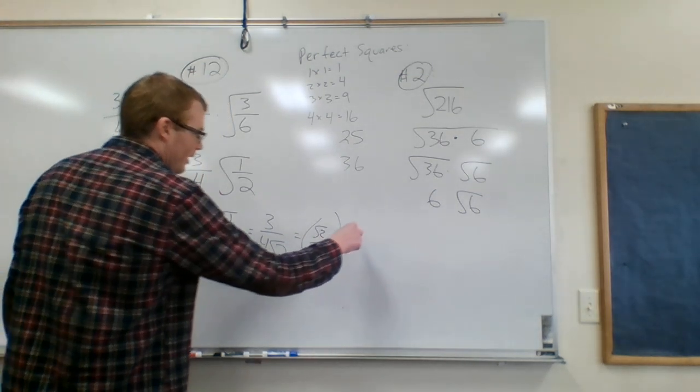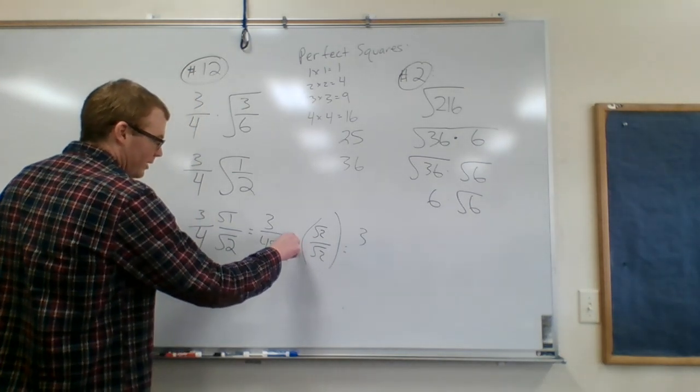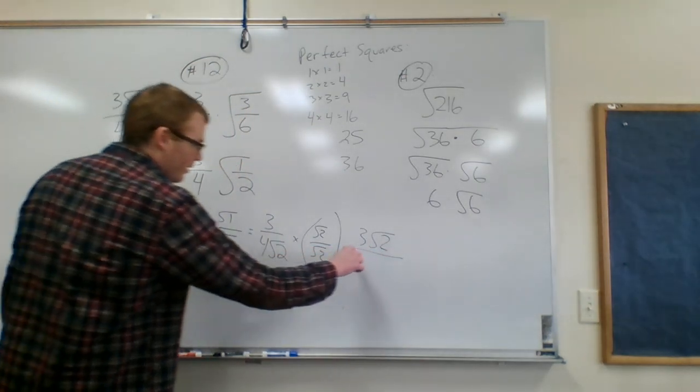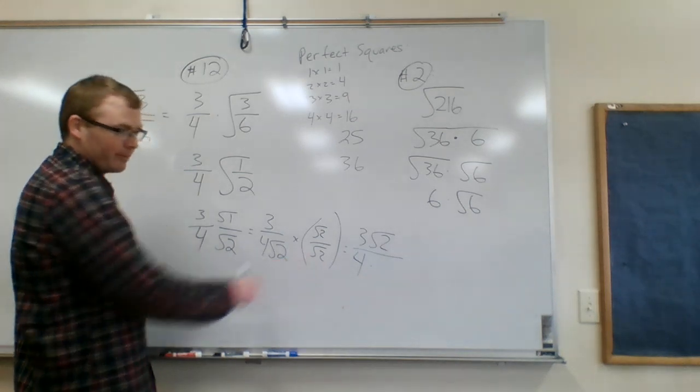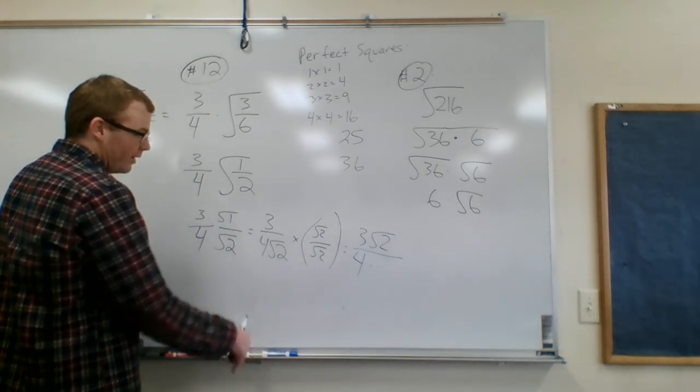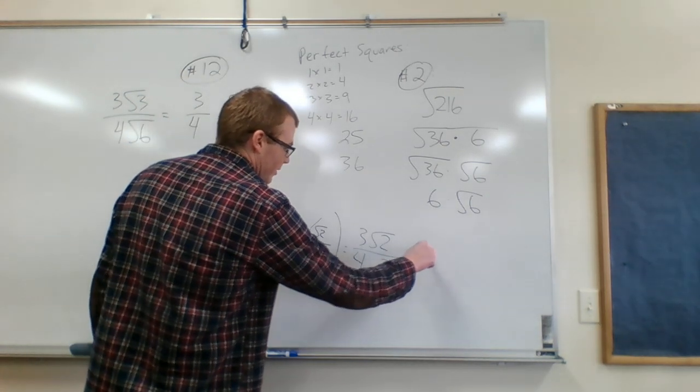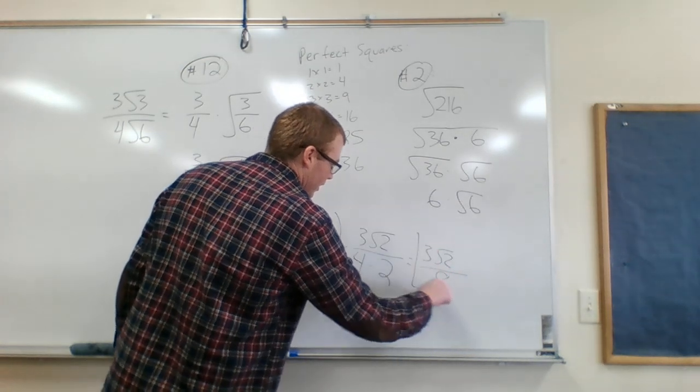What happens when you do that? Then multiply straight across, times. So 3 square root of 2 over 4 times, and then square root of 2 times square root of 2 is equal to square root of 4, which just equals 2. So your final answer, 3 square root of 2 over 8.